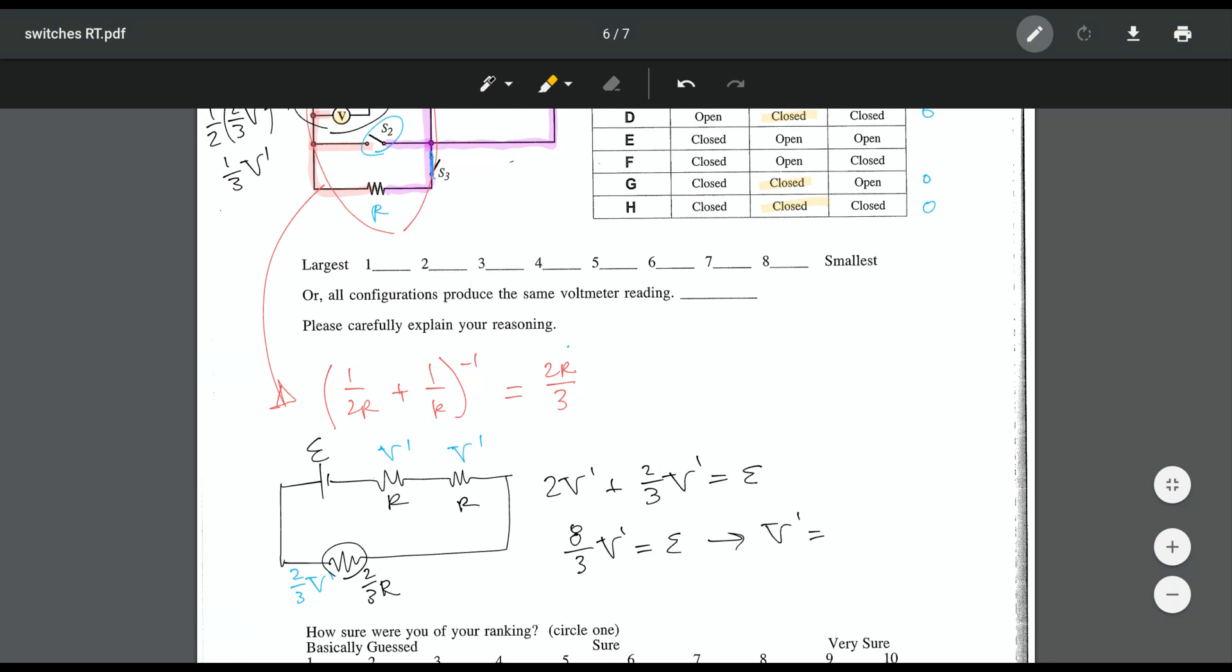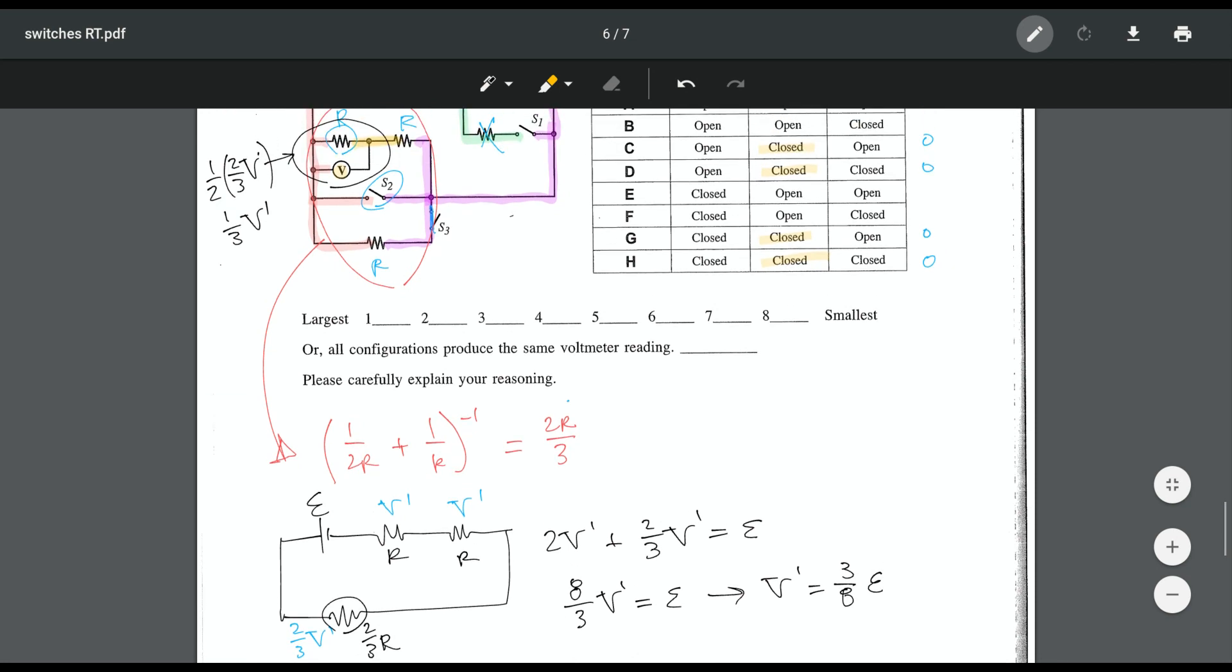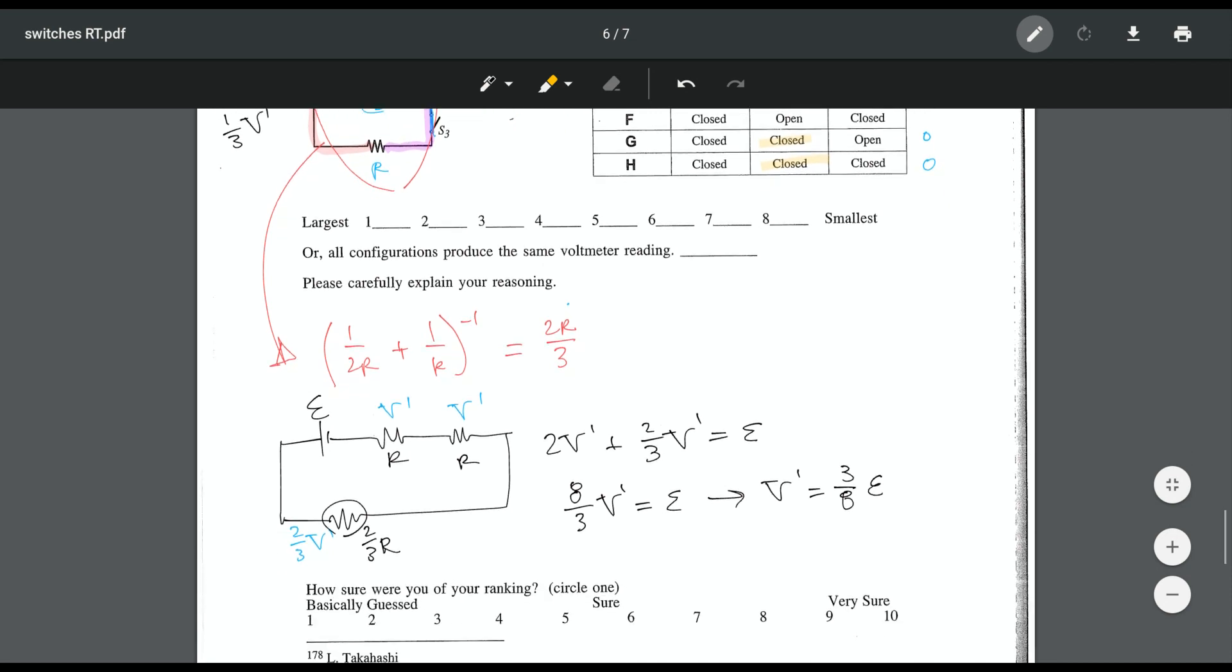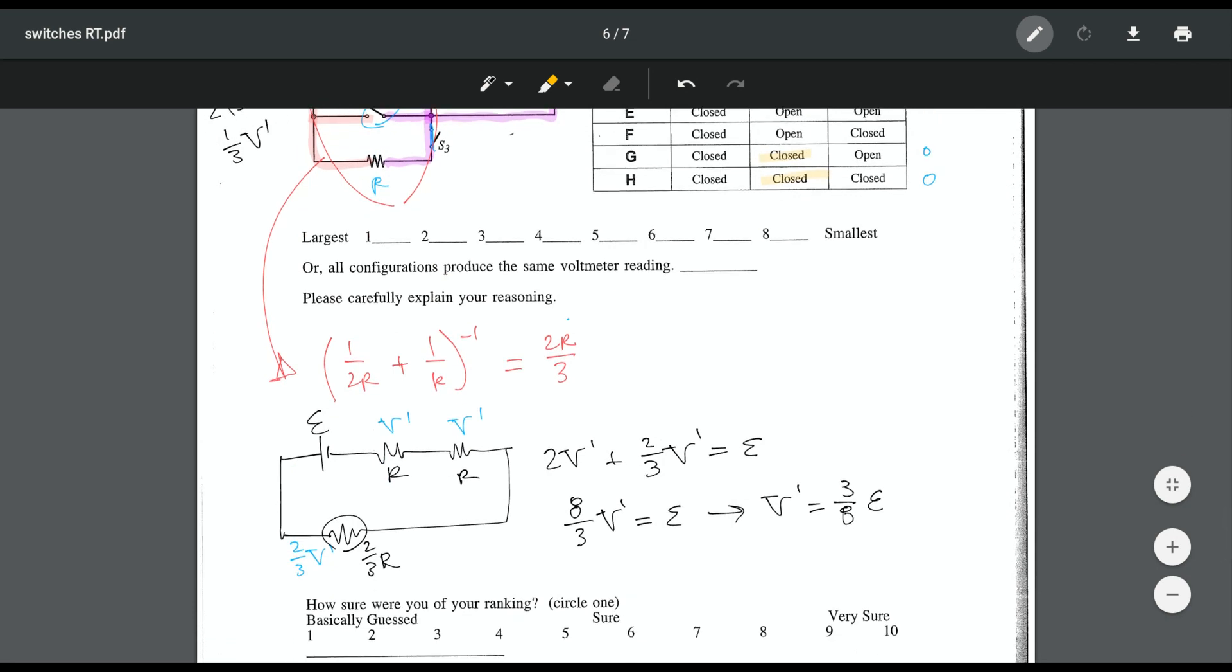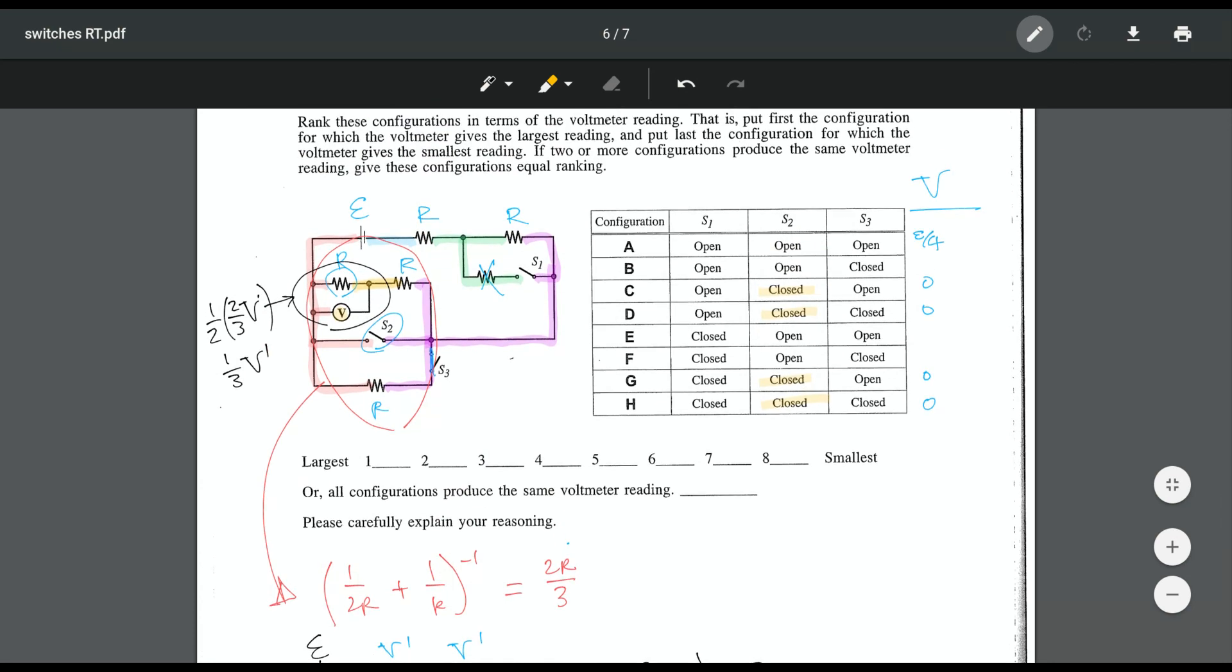And I know that the drop over the resistor in question is 1 third V prime. So again, I'm looking at case B. The notation I'll use is V sub B is going to be 1 third V prime, so that gives me E over 8 for that case. So I'll write that in. This is going to be E over 8, and I'm going to leave the other parts of this one for you to do.